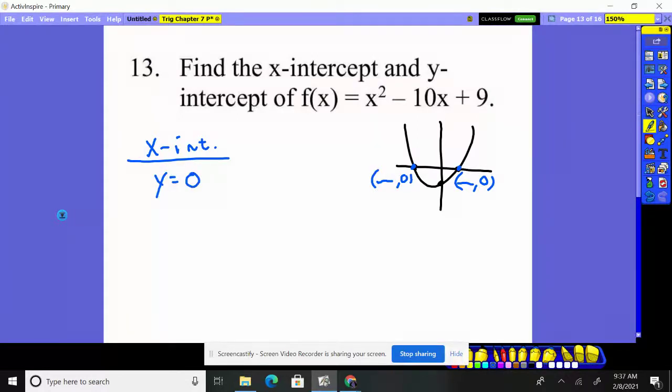That's always going to be true. If we're looking for where it crosses the x-axis, the y value, the height, has to be zero. So we take the original equation and set the y to zero. f(x) is the same as y, so we're setting that equal to zero: 0 equals x squared minus 10 times the x value plus 9, and we're trying to find that x value.